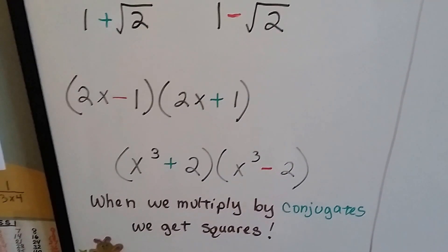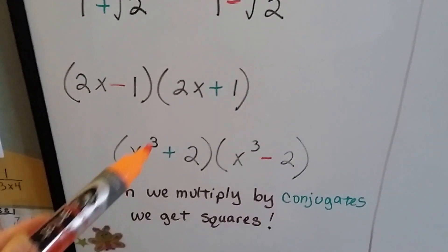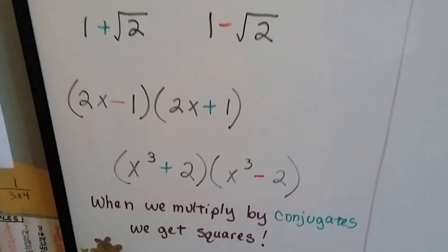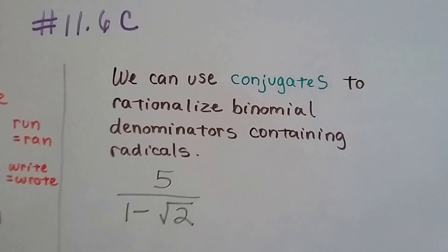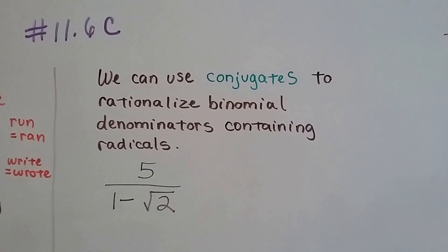And when we multiply by conjugates, we get squares. Alright, so we can use conjugates to rationalize binomial denominators containing radicals.